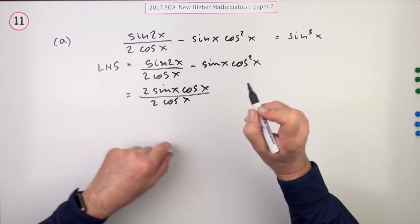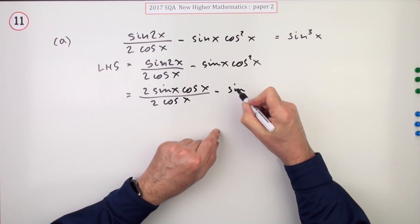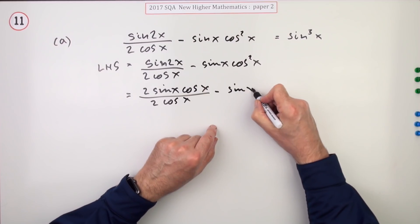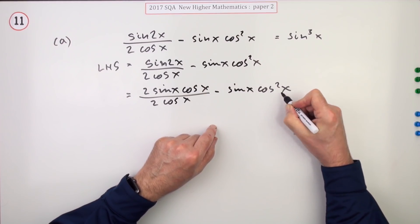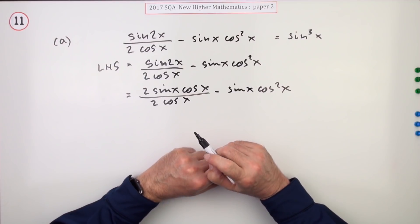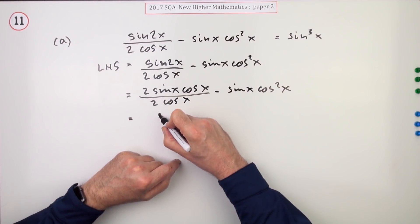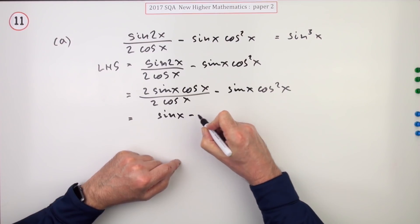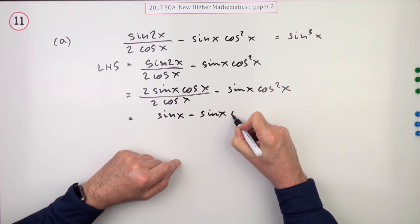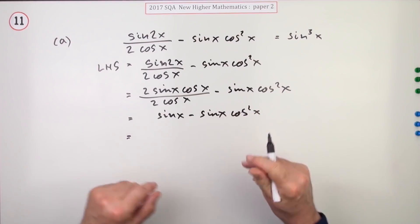And of course, having done that, that simplifies that considerably. At the same time I could do the next bit, but I think I'll just leave it because I know I also don't want that cos squared x. But having done that, that cancels down just to sine x. I've got sine x minus sine x cos squared x.